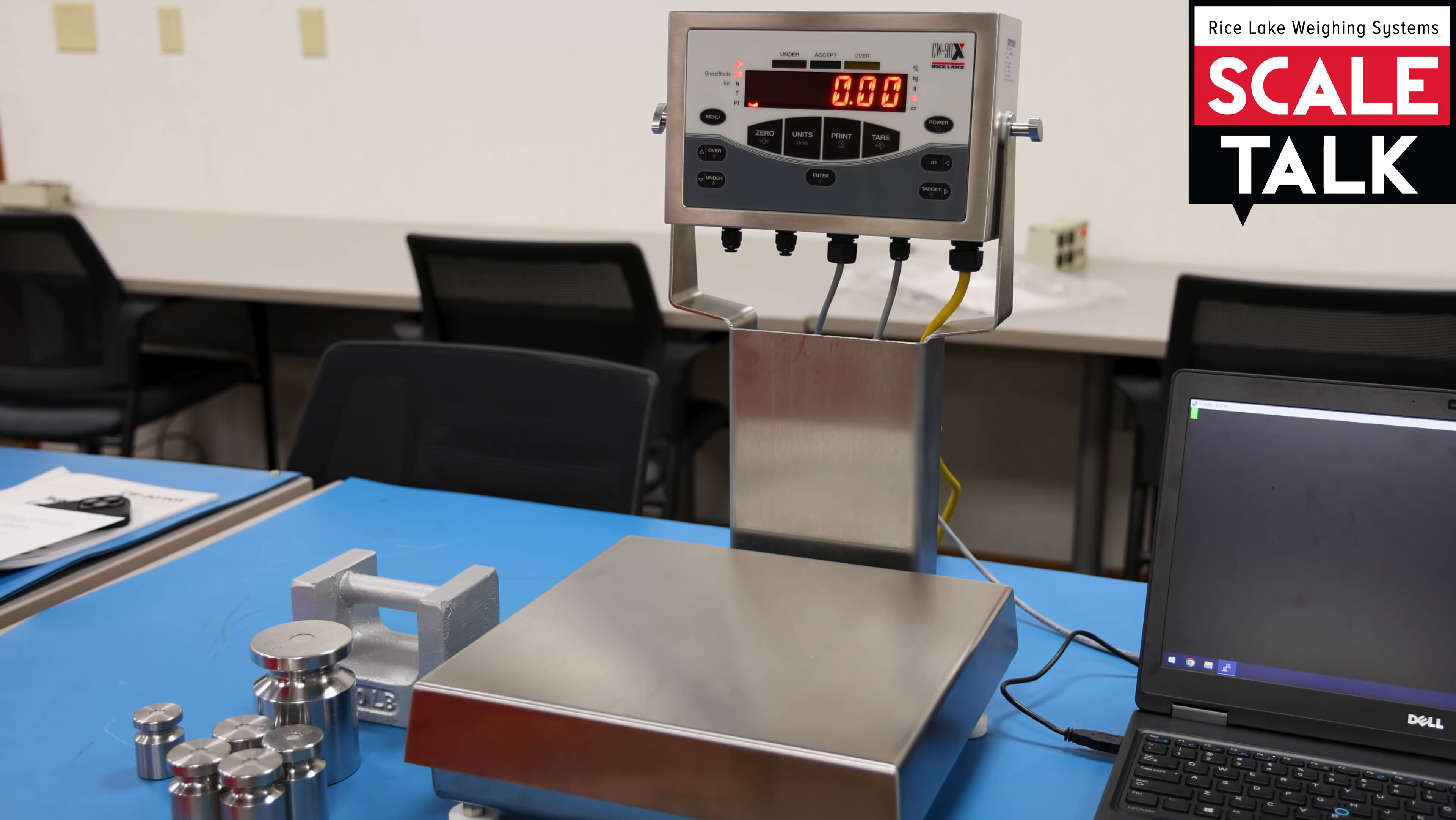Either you're over a specific target or you're under a specific target, and the check weigher is going to give you some visual feedback as to whether or not you're within that particular range that you're looking for.